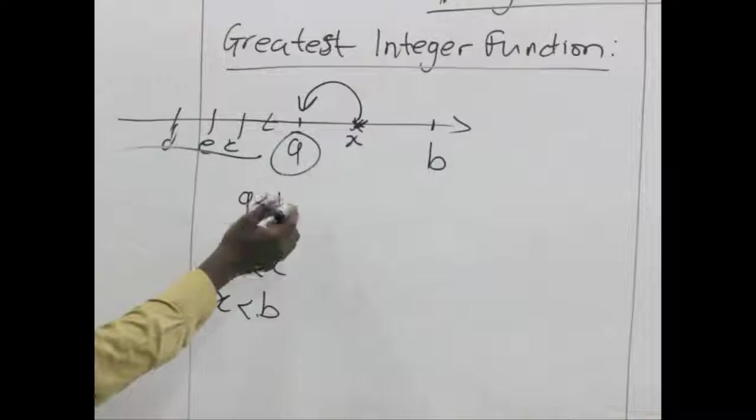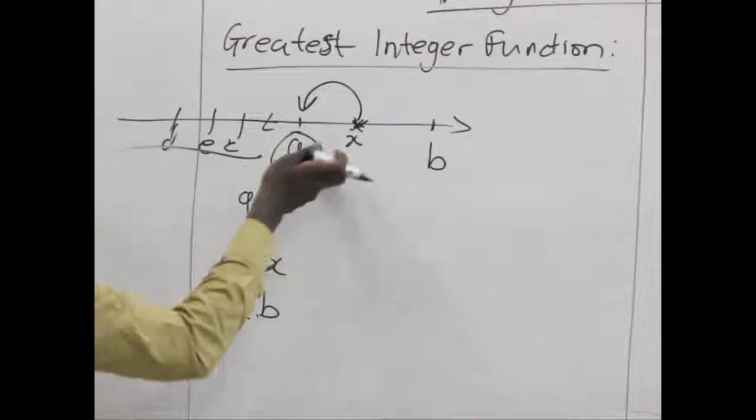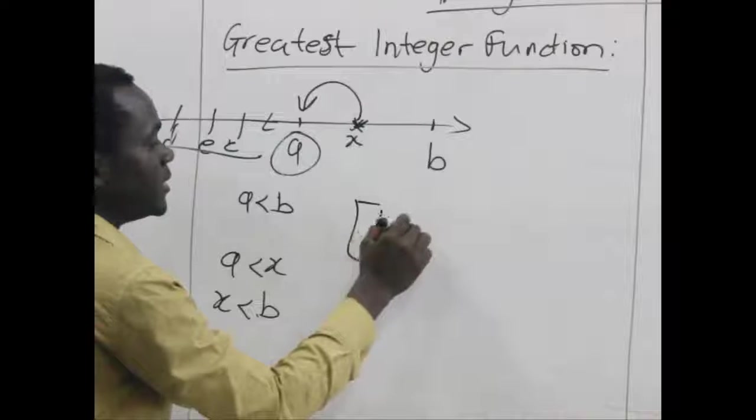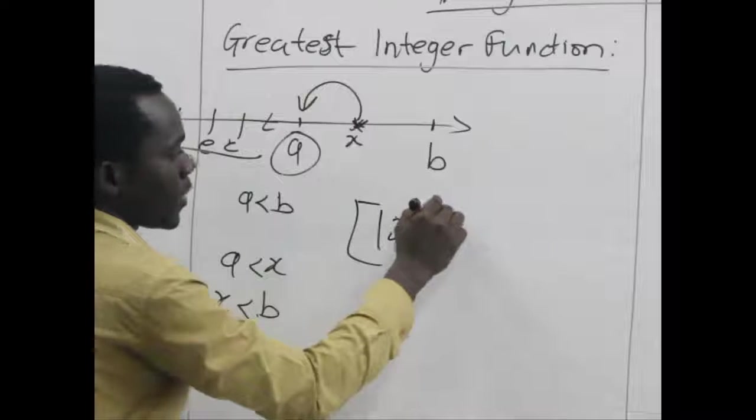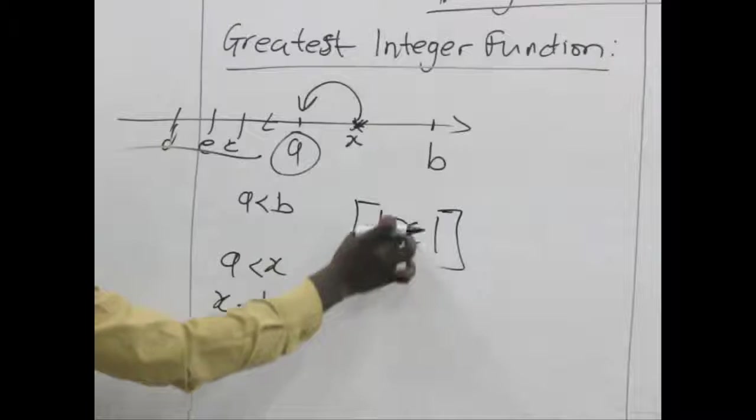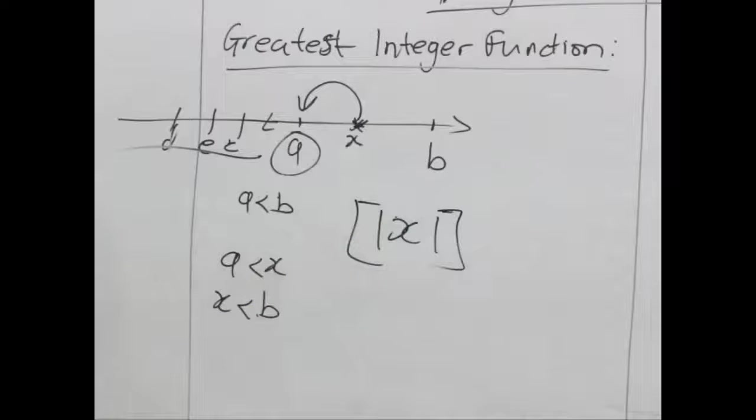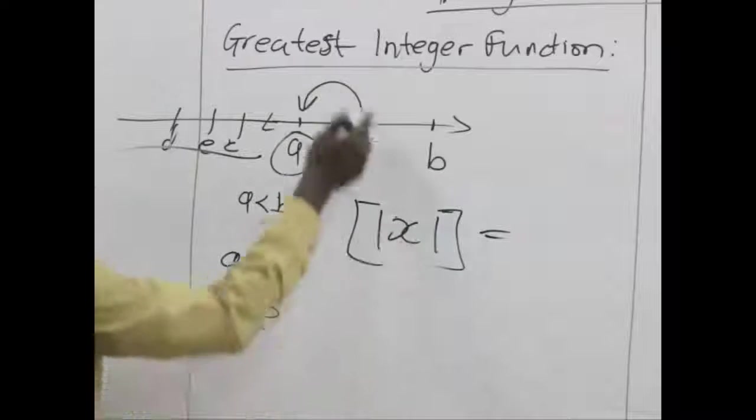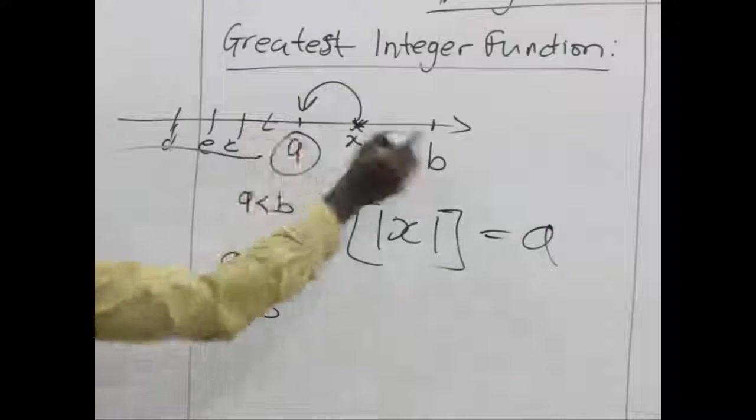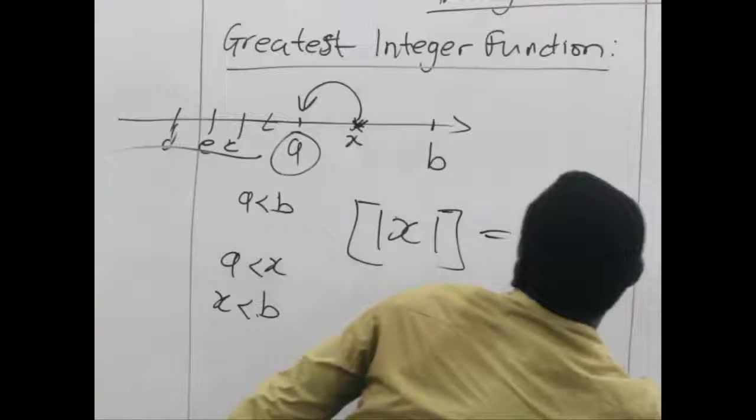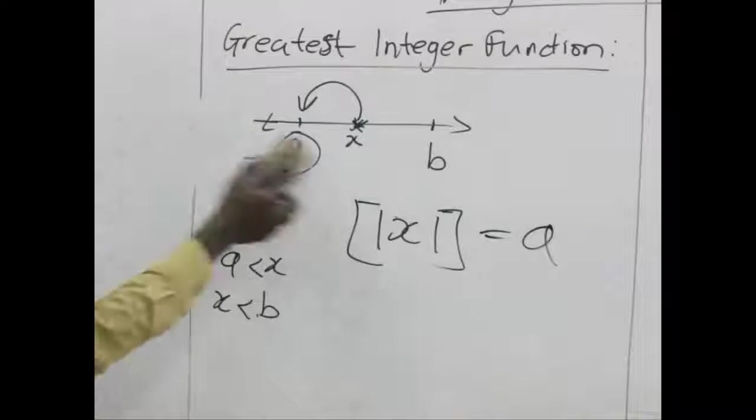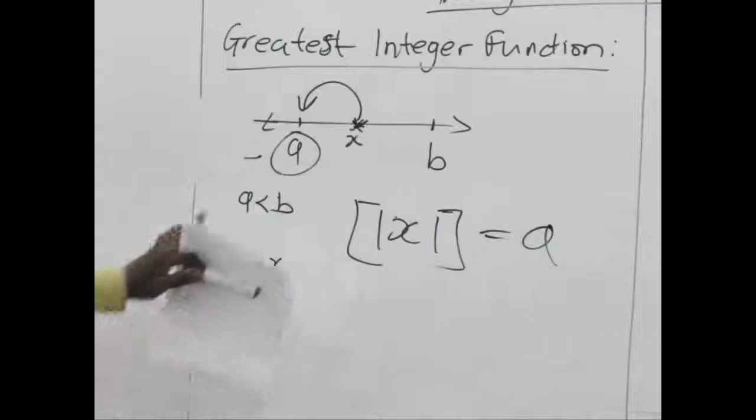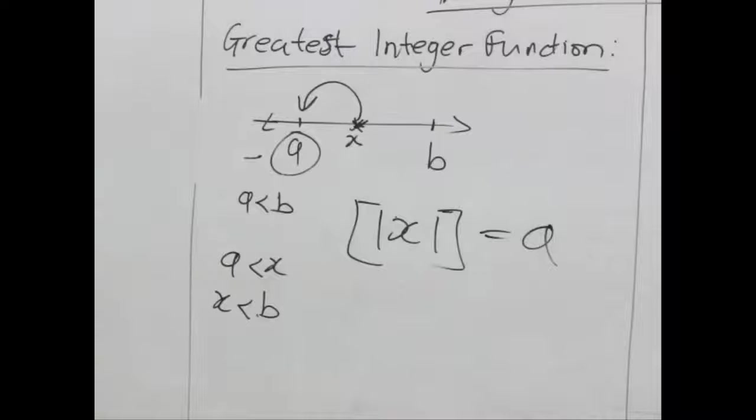So when we talk about the greatest integer function of x here in between a and b. We are actually picking a. And we denote this by this symbol here. It's just like an absolute x within a square bracket. So when we place x in between a and b. The value becomes a. Using this particular number line. When we restrict ourselves to a and b. So we can have a graph for a greatest integer function.